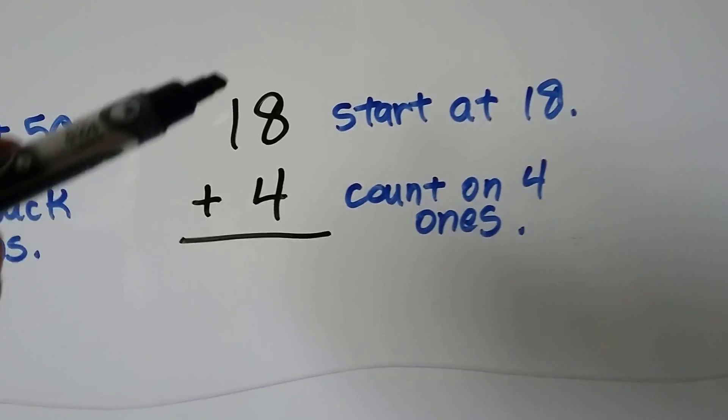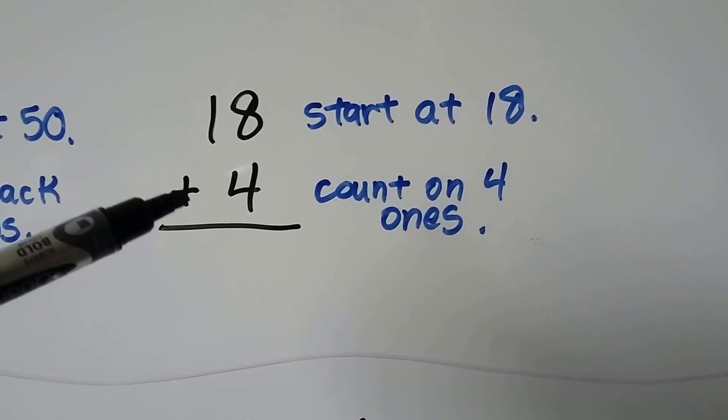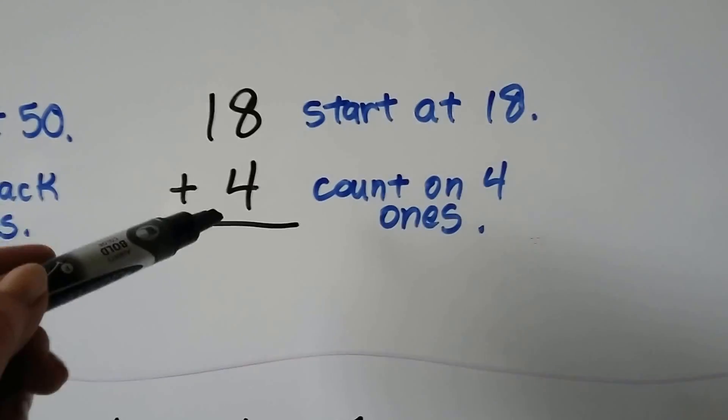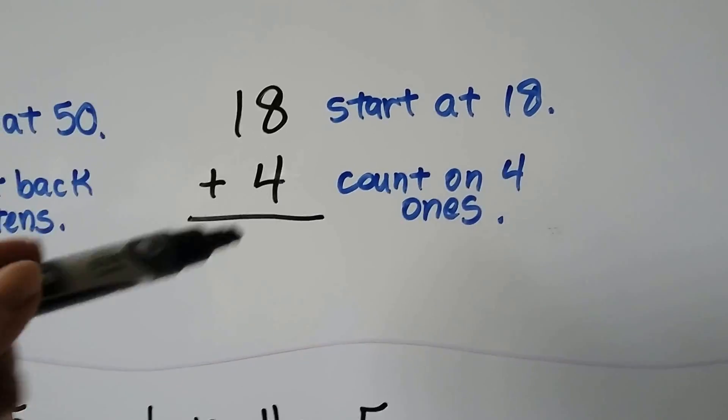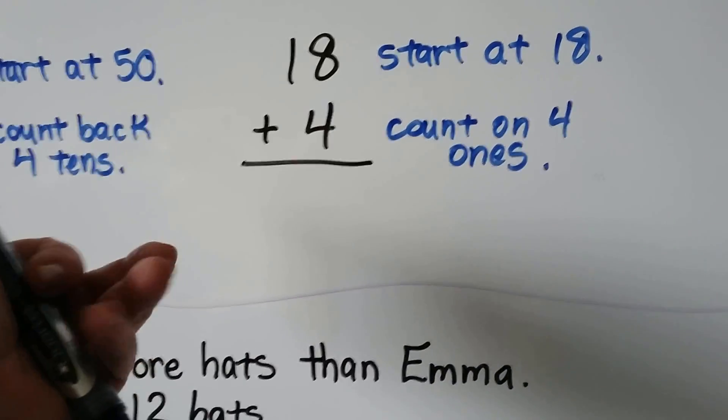18 plus 4, we can start at the 18 and we can count on 4 1s to add. We'll keep adding a 1 four times until we find the answer. 18, 19, 20, 21, 22.